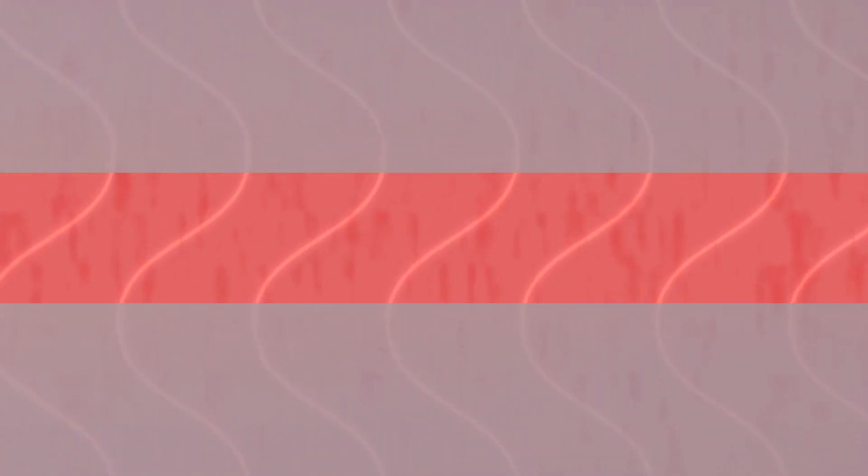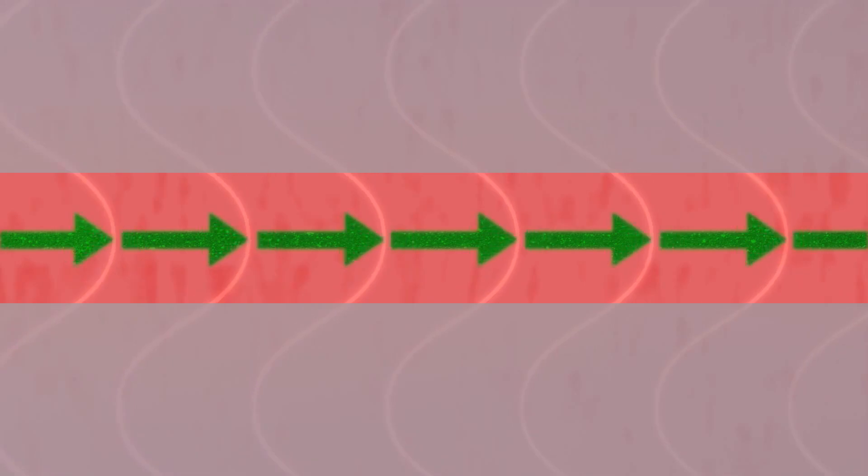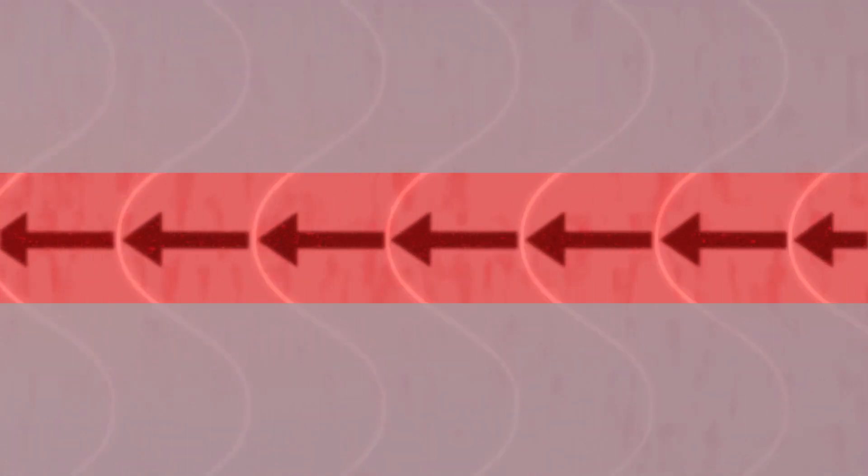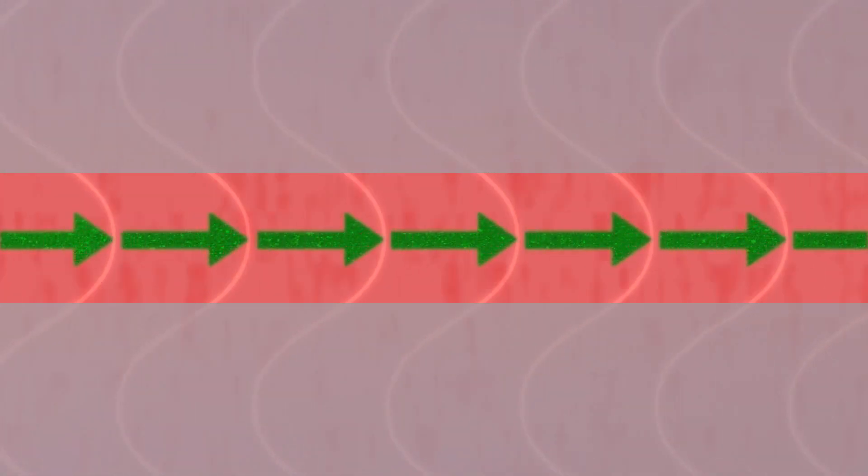To achieve net acceleration, the electrons must somehow encounter more green arrows than red. We did this by modifying the channel.